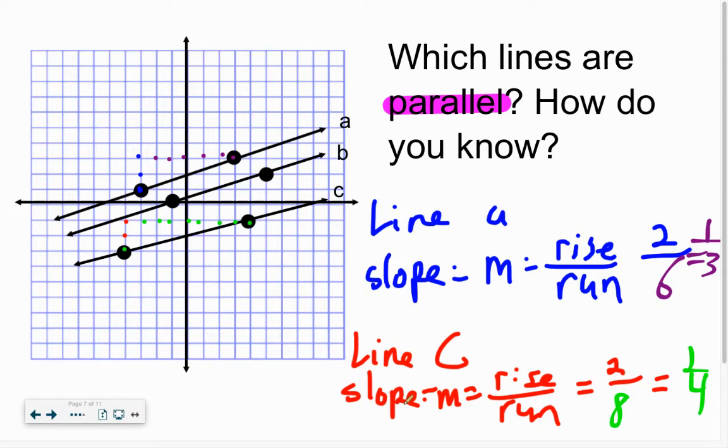So then when we take a look at it, right here, are line A and C parallel to each other? Do they have the same slope? Did it come out to be the same number or fraction? Nope. Bummer. All right.